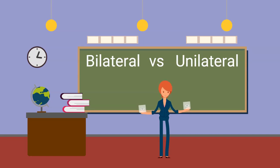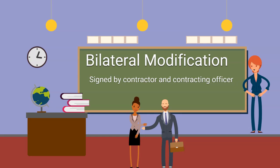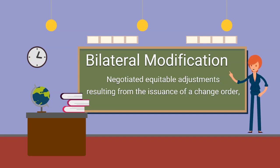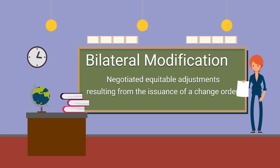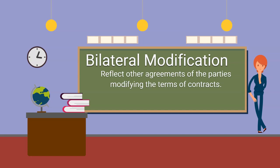We have two distinct modifications: bilateral and unilateral. Bilateral modifications are signed by the contractor and the contracting officer. They are also called supplemental agreements. Bilateral modifications are used to make negotiated equitable adjustments resulting from the issuance of a change order, definitize letter contracts, and reflect other agreements of the parties modifying the terms of the contract.